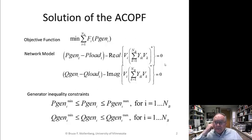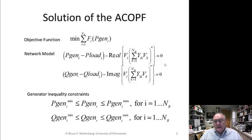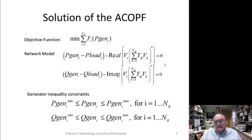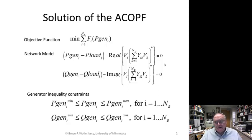We're going to set up now the solution of the ACOPF. This was the most difficult problem to solve. It took 30 years of researchers working on a solution, and it turned out that their solutions weren't very good or didn't converge rapidly enough. It took a long, long time to get reliable solutions, not until the 1990s.